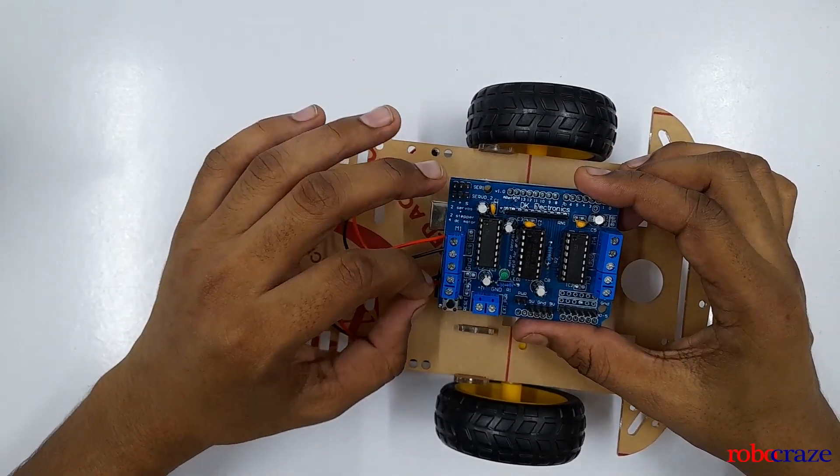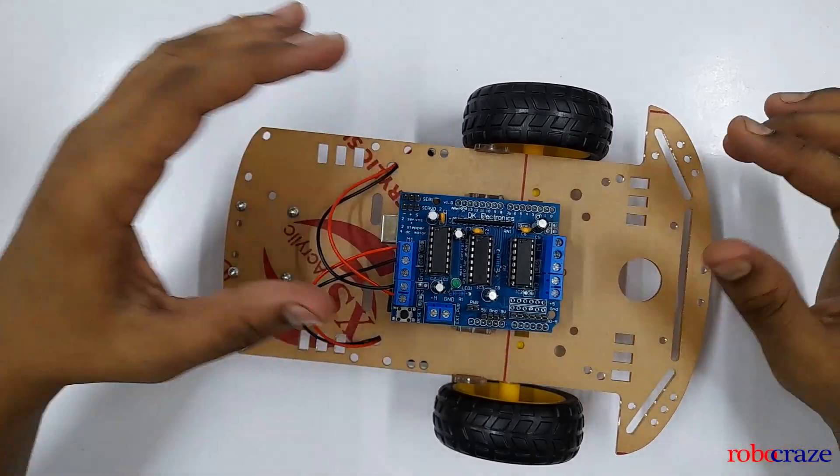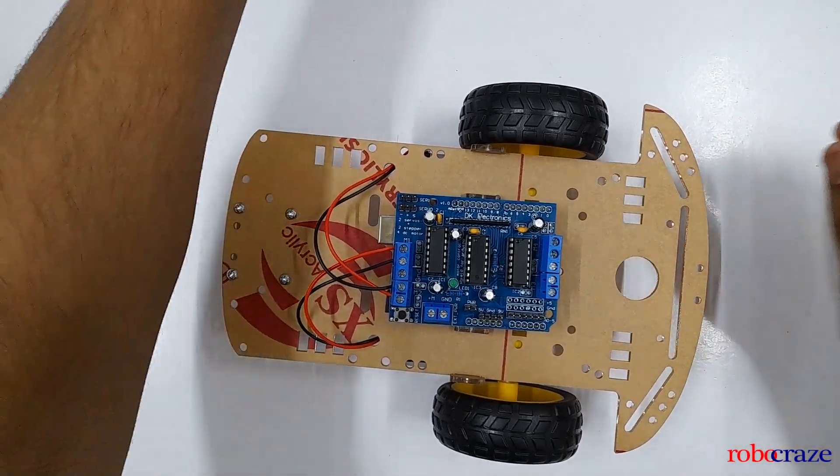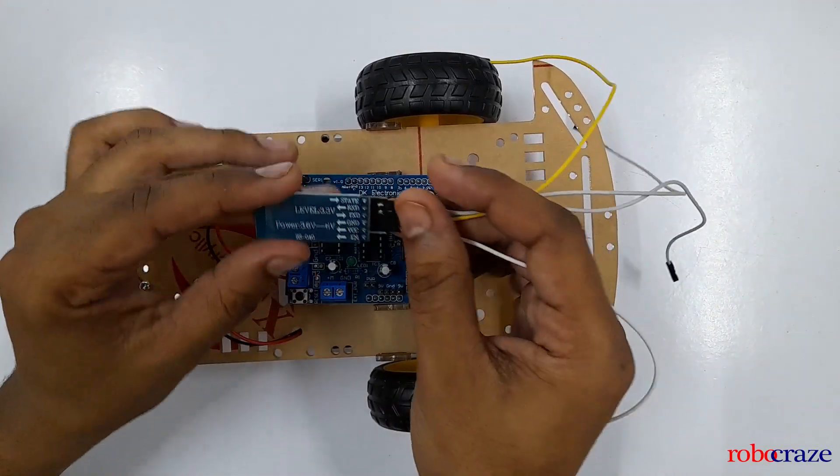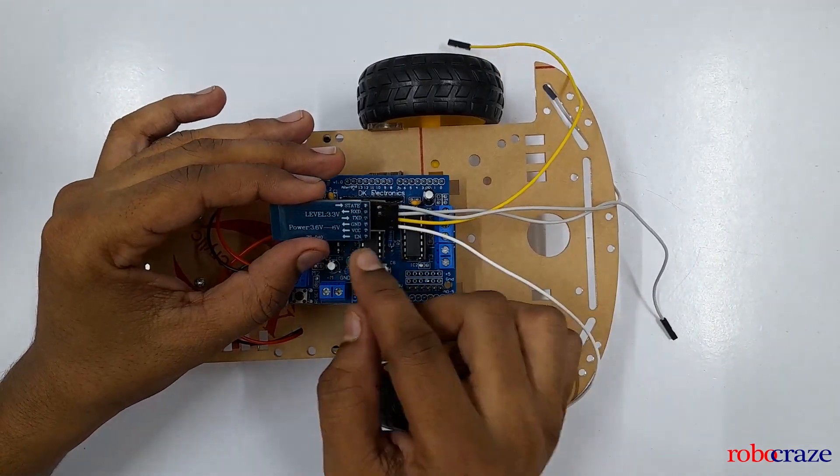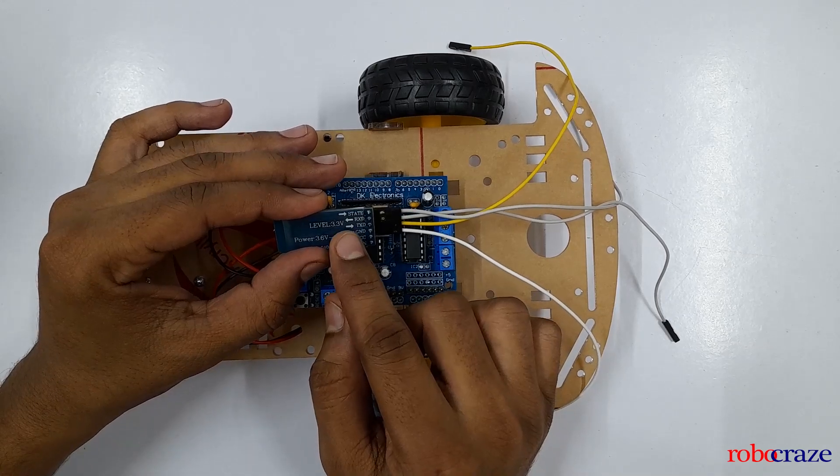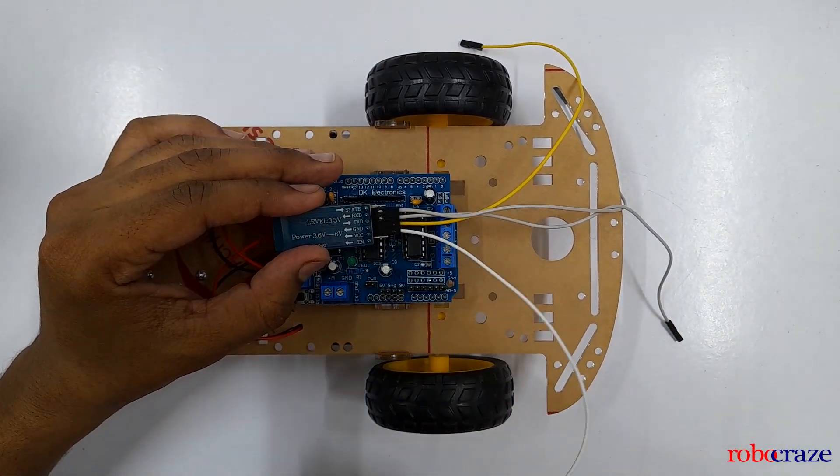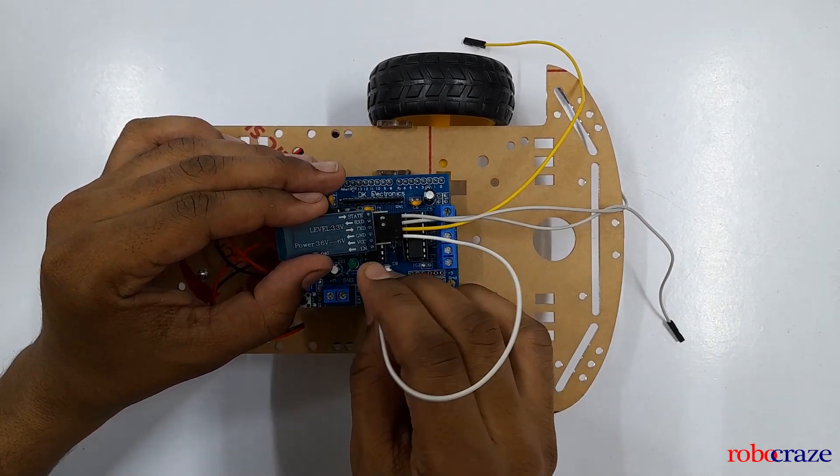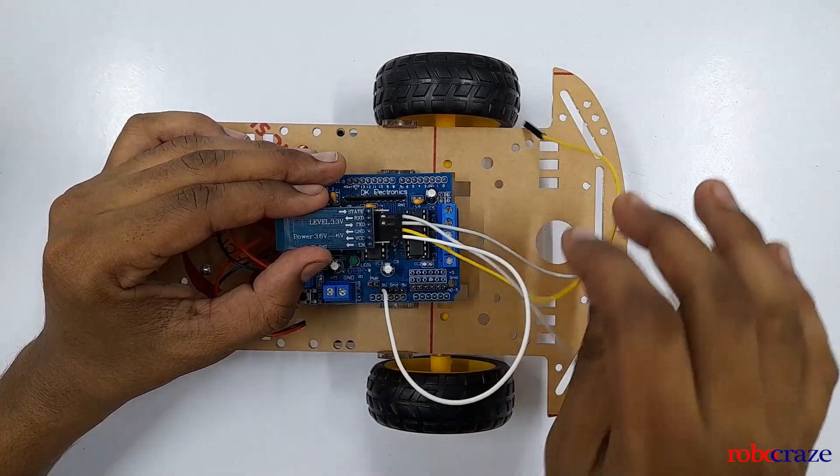After this we'll connect our Bluetooth module using some jumper wires. As for the Bluetooth connections, as you can see we will be using VCC, ground, TX and RX. VCC will go to the 5 volt pin here and the ground will go to ground.